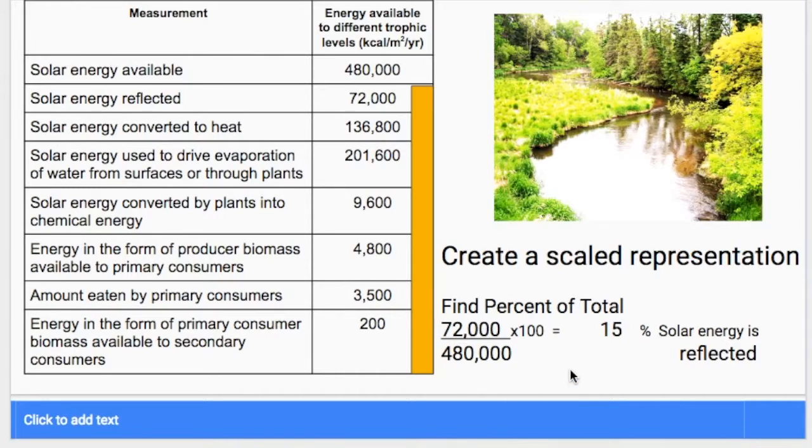So what I'm going to have you do is I'm going to have you create a scaled representation. You're going to be making some visual diagram that represents how much energy is in all of these different forms. So the total amount of energy that is hitting any part of the ecosystem is 480,000 kilocalories per meter squared per year. And if you wanted to calculate how much of that energy is just being reflected, how much of that light is just reflecting back into space, what you would need to do is a calculation like this, where you would find the percent of that total energy available, you would take one of those numbers for energy reflected, you divide it by the total, multiply it by 100, and you would get 15%. So what I'm saying is that 15% of the solar energy that is coming in is just being reflected back into space.